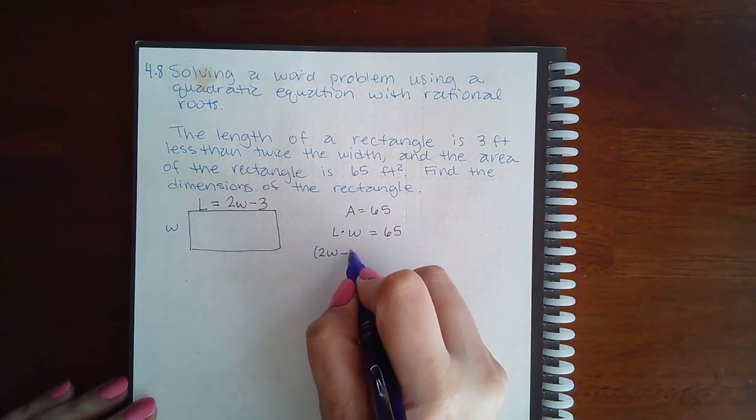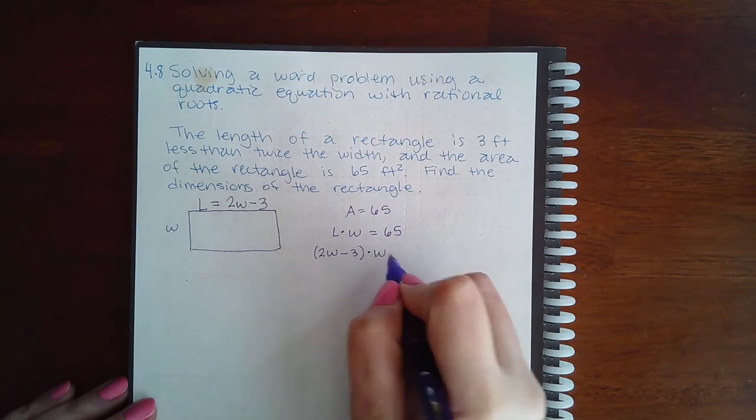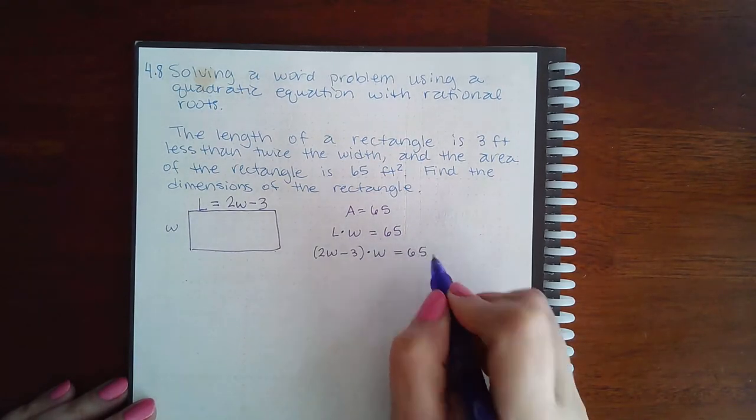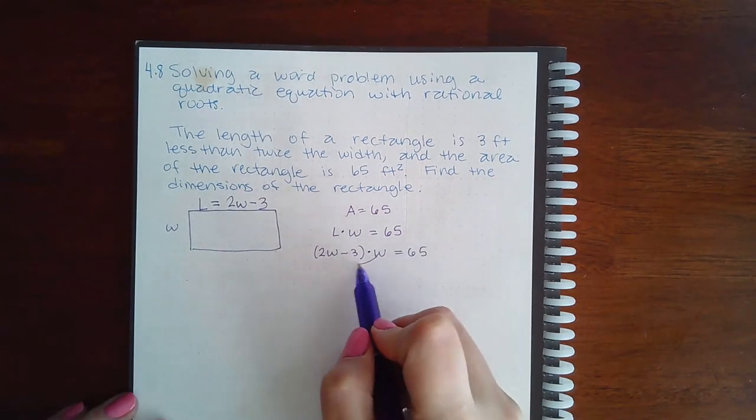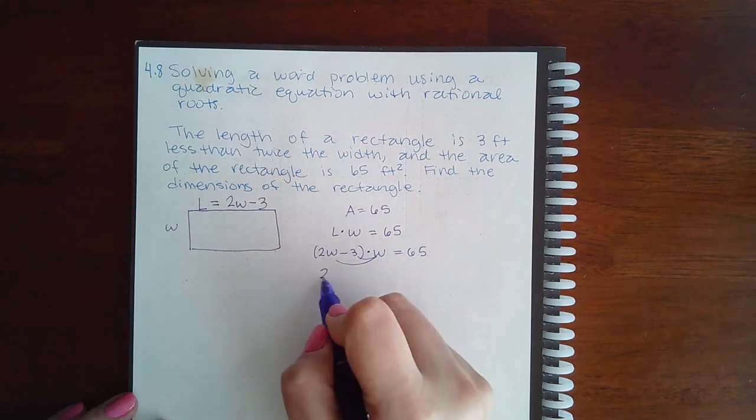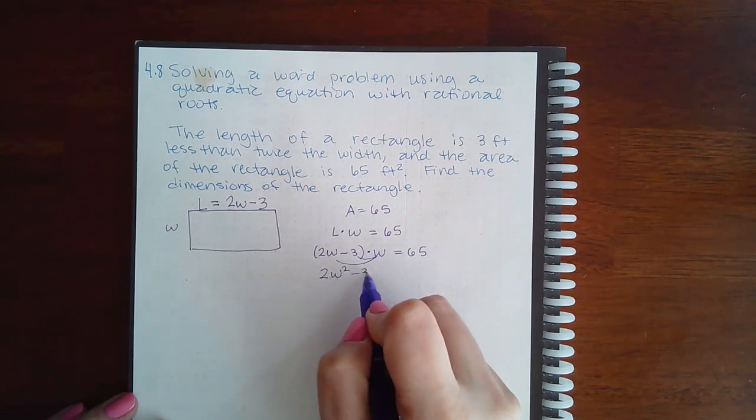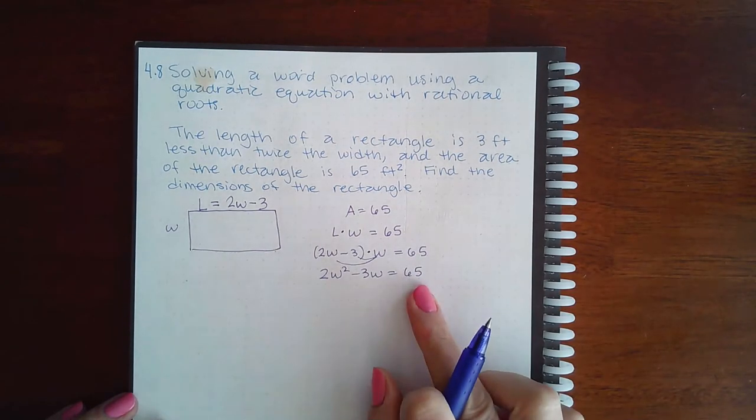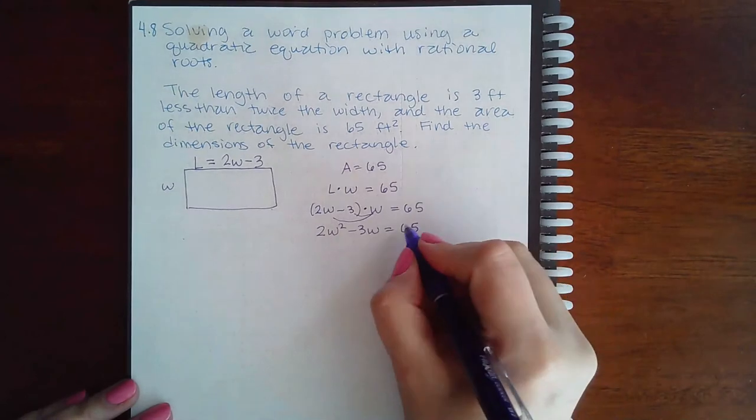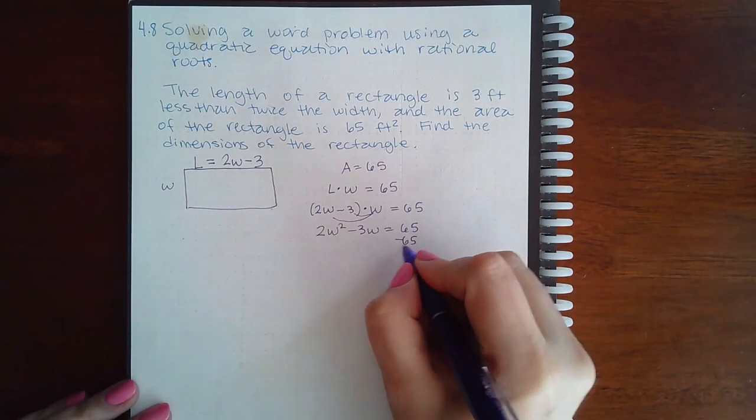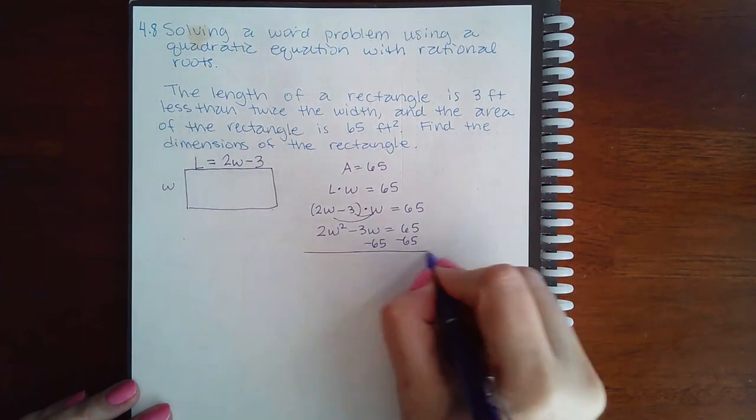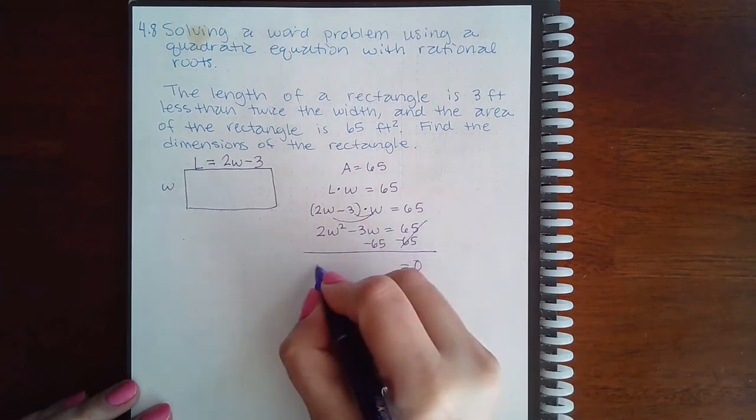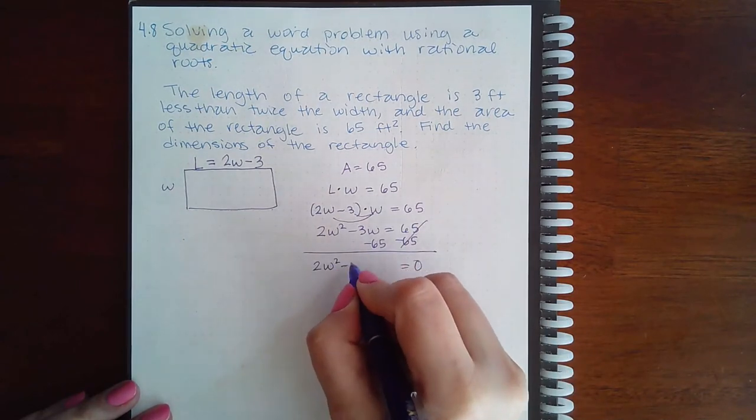If I use my distributive property, I can distribute this w, so I get 2w squared minus 3w equal to 65. This is a quadratic equation, so the first thing I need to do is minus 65 on both sides to get it equal to zero. So I have 2w squared minus 3w minus 65.